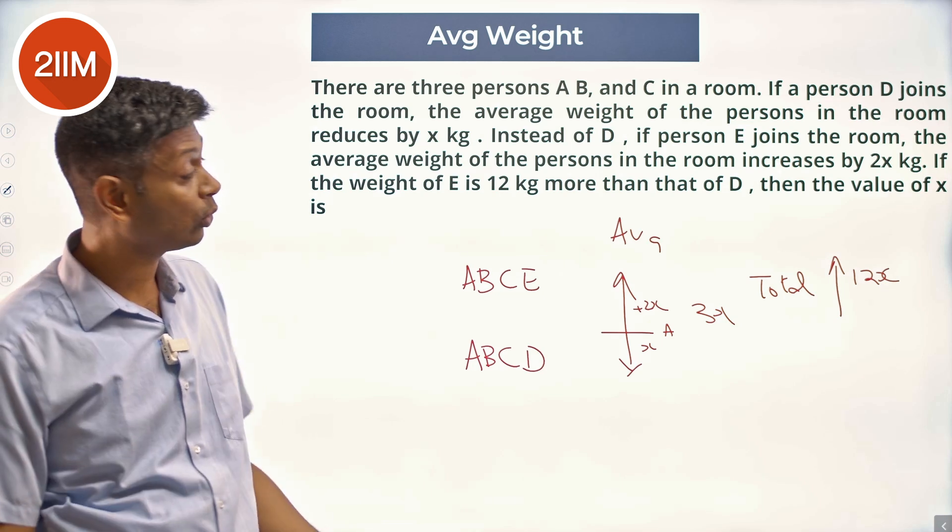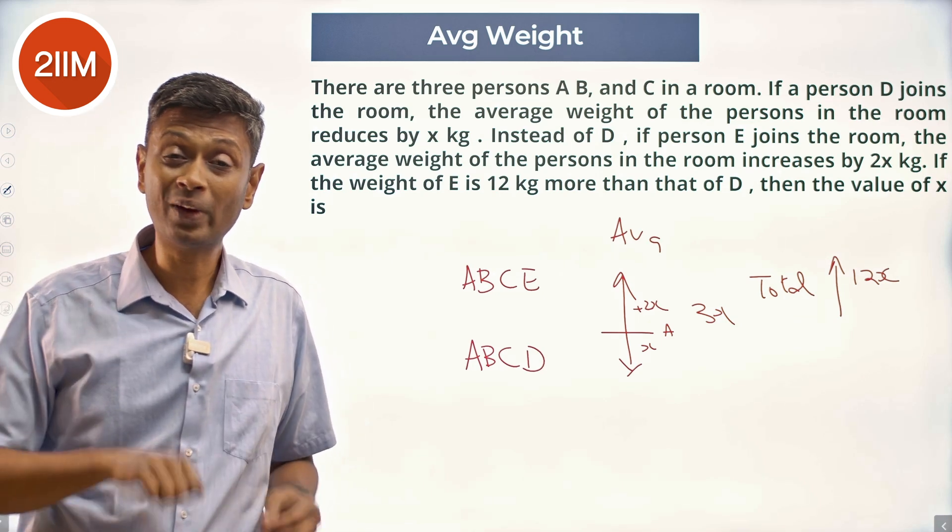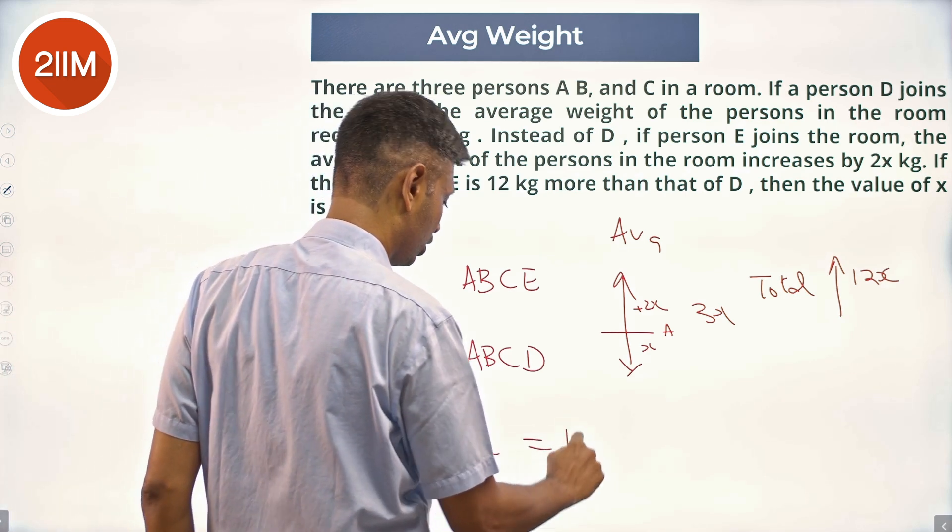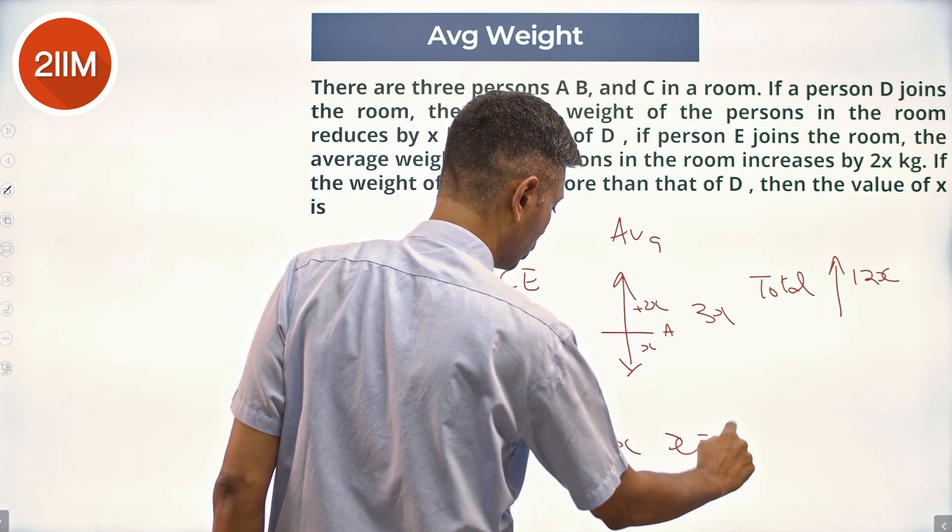The weight of E is 12 kilograms more than D. E brings in 12 kg more than D. So 12 kg extra equals 12x, therefore x is 1.